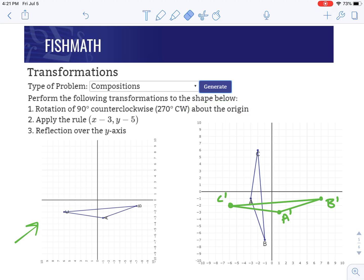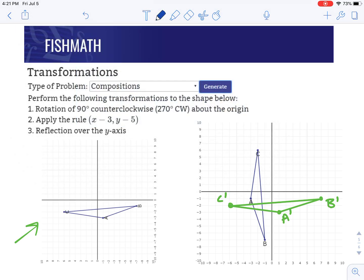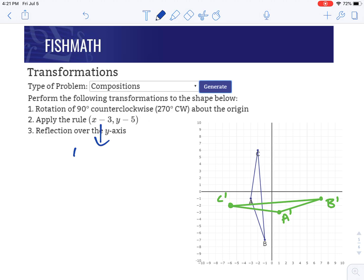Now we're going to do step two. Step two is the translation of x minus three, y minus five. So what does this mean? Well, the x's are always lefts and rights. So if it's x minus three, that's going to be left three. If it was plus, it'd be right. Y minus five is going to be down five. So if it was plus there, it'd go up.